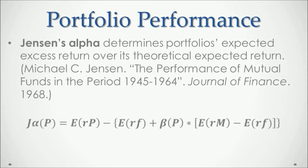As a formula, Jensen's Alpha for the portfolio is equal to its arithmetic mean of historical returns, minus, inside the curly brackets, the expected return or arithmetic mean of the risk-free rate of return — the one-year treasury bill — plus the portfolio beta multiplied by the market risk premium. This market risk premium is equal to the market's expected return or arithmetic mean minus the risk-free rate's expected return or arithmetic mean.